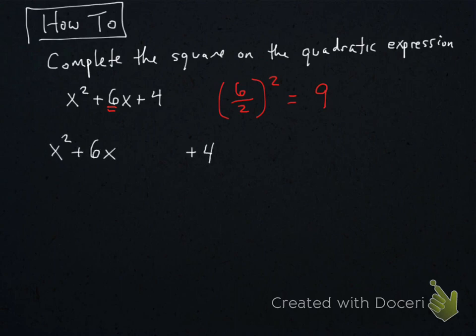Next, rewrite the expression, but leave some space. Take that number we just found, which was 9, and write plus 9 minus 9 in the gap we left. It's important to notice that we actually haven't changed the expression, since 9 minus 9 cancels out to give 0. All we're doing is rearranging the numbers to help us find a perfect square.